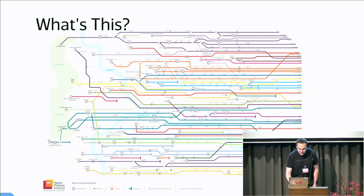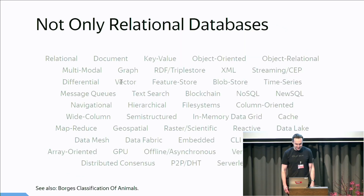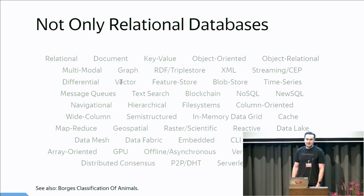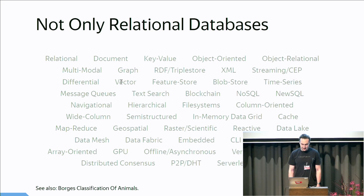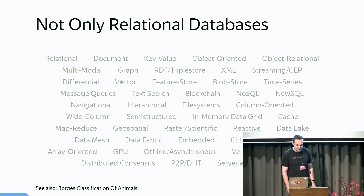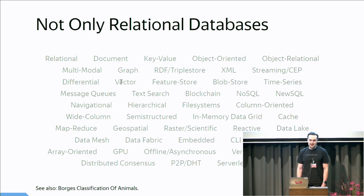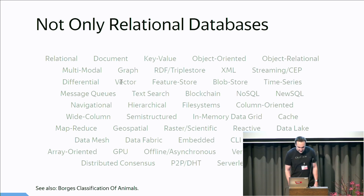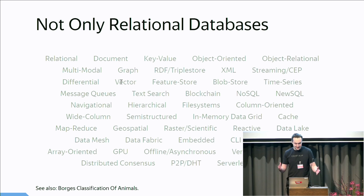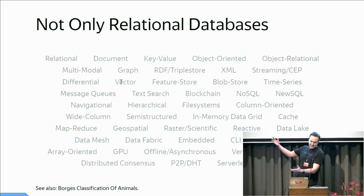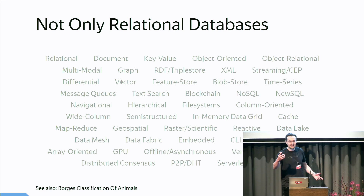Let me also show you this list. We should think not only about relational databases but about databases in general — about database management technologies. There are a lot of different kinds: relational, document databases, key-value databases, same-structure databases, in-memory data grids.